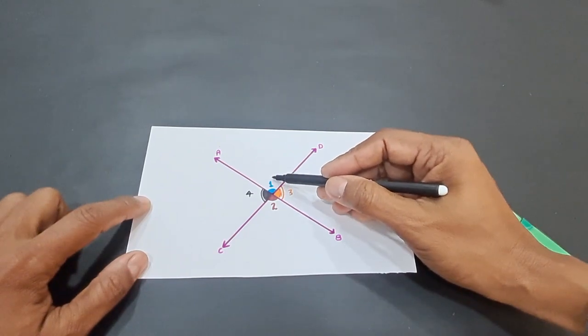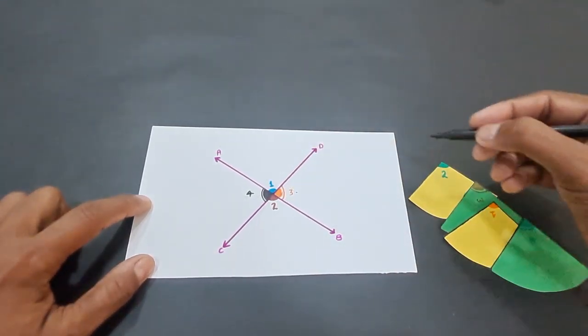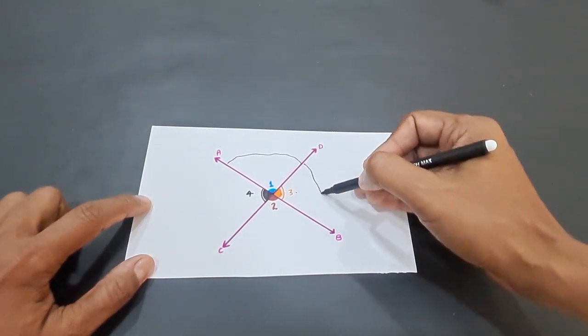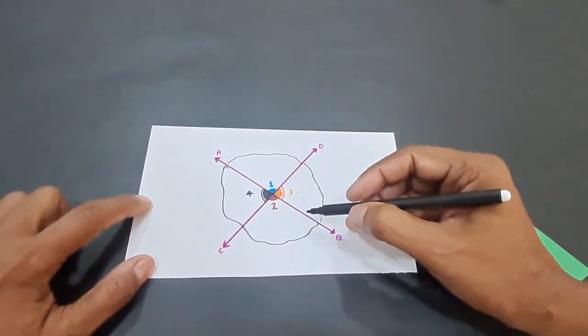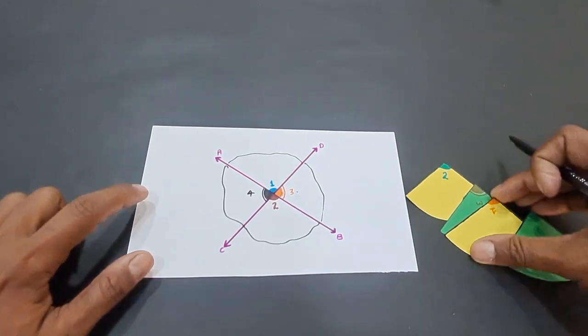Label them as angle 1, angle 2, angle 3, and angle 4. Then you can use a circle or random curved lines like this to get cutouts of these four angles. I have already cut it out for you.